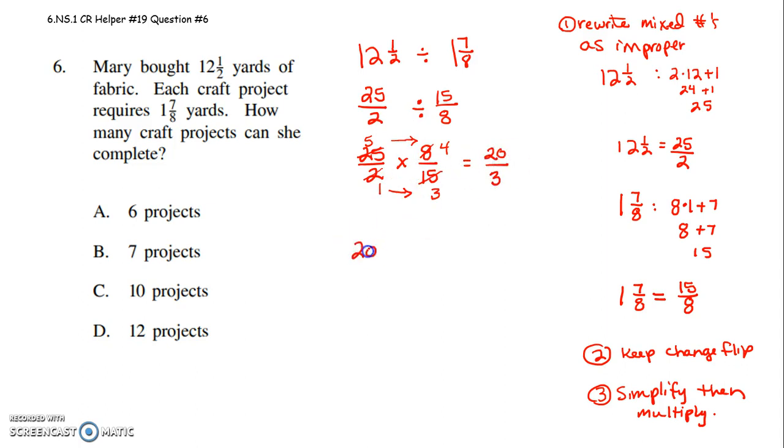So now I have 20/3. I have to put that back into a mixed number. So I'm going to say how many times does 3 go into 20? 3 times 6. 6 times 3 is 18. 20 minus 18 is 2. So it's 6⅔.